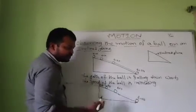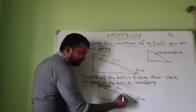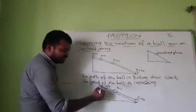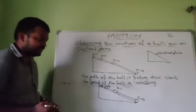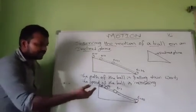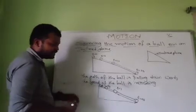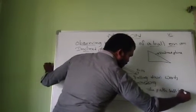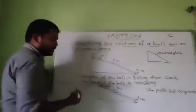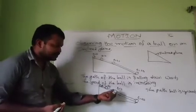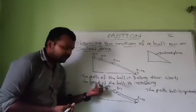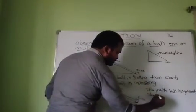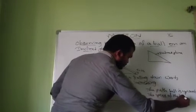Now observe this — whenever you push, there is more force, so due to that it travels more distance in the first second. In the second second, the force is decreasing, so it travels lesser distance. Third second, even lesser than that. So what is the path of the ball in this case? The path of the ball is moving upwards. What is the speed of the ball? The speed of the ball is decreasing, because the distance it covered per second is decreasing.